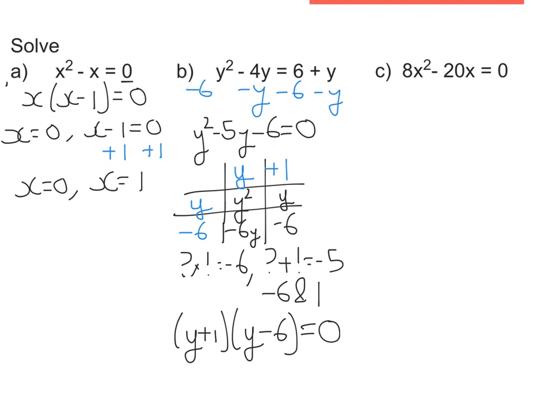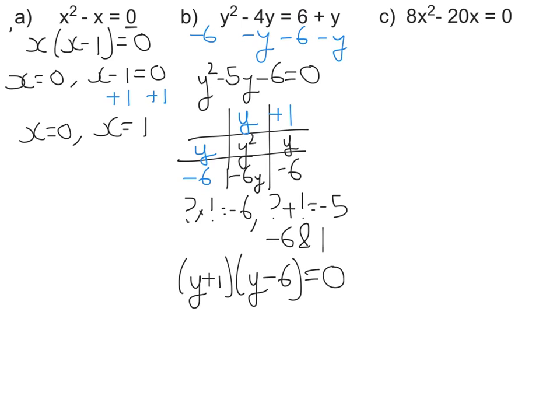So now I've got it in the factorized form. I can now write these as two mini equations equal to zero. So I'm going to have y + 1 = 0, or y - 6 = 0. Now we need to solve these two, so -1 for both sides for that one, +6 to that side. And I'm left with y = -1 and y = 6, and there's my answer.